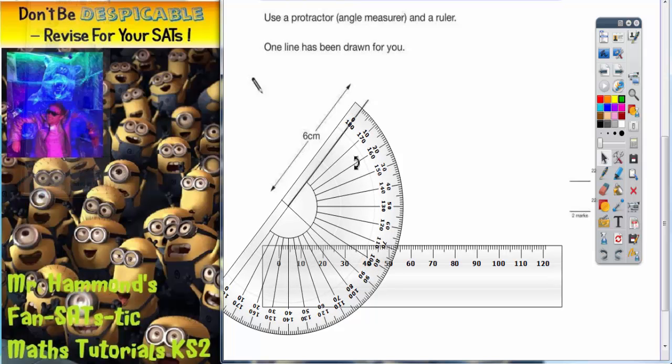It's not quite there yet, there we go. So you've got to ask yourself, if we're starting on this line here, to get to 55, are we using the inside numbers or the outside numbers?